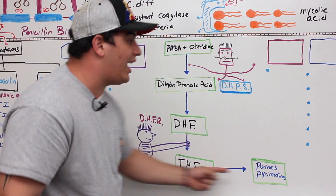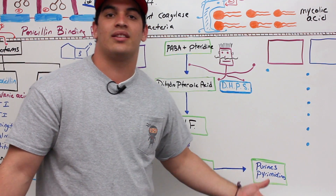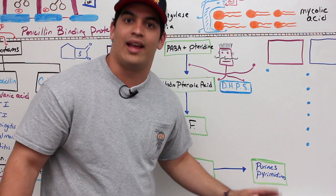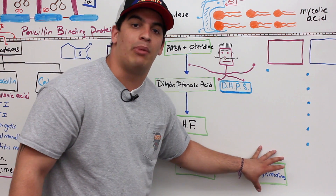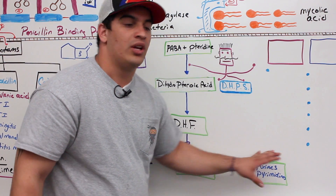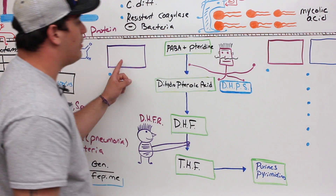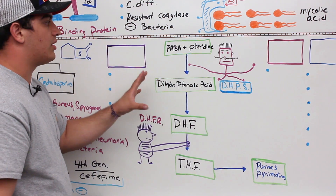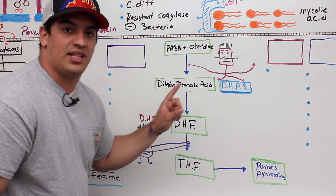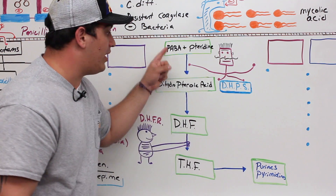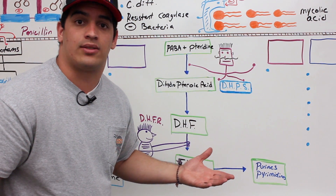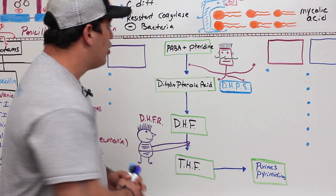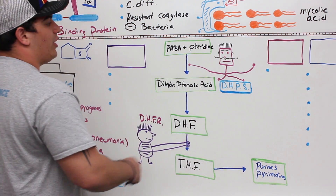If this pathway can't occur, you can't synthesize functional DNA — you won't have the necessary components. So you want to give drugs to bacteria that inhibit this pathway, because then bacteria can't survive. So what drugs could you give?